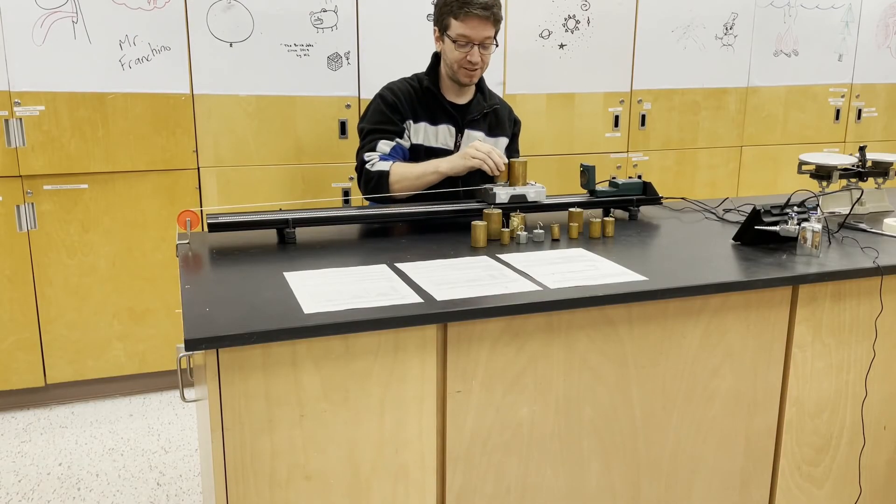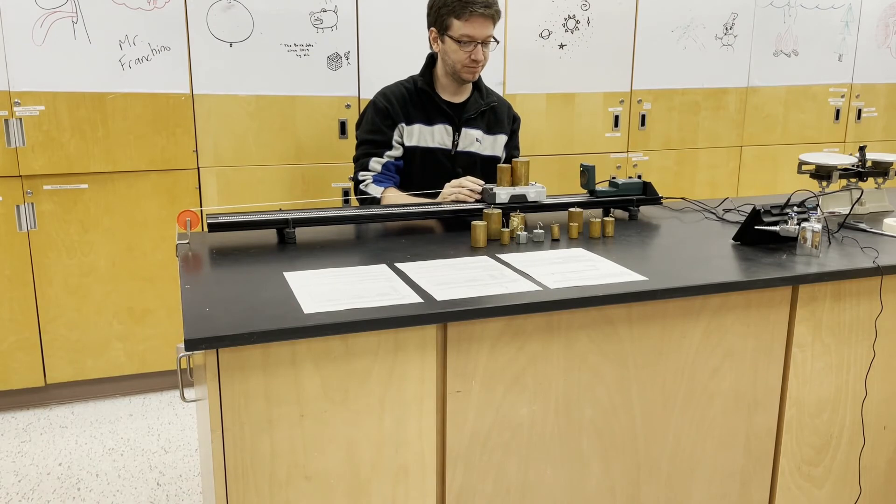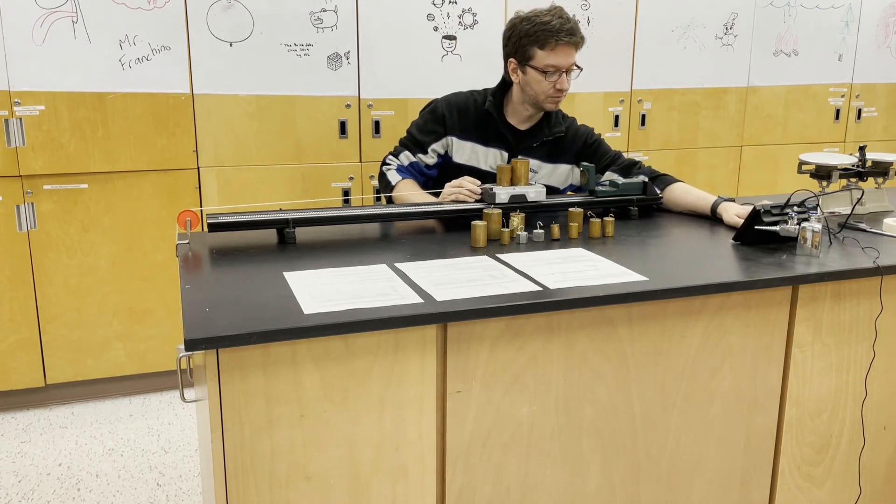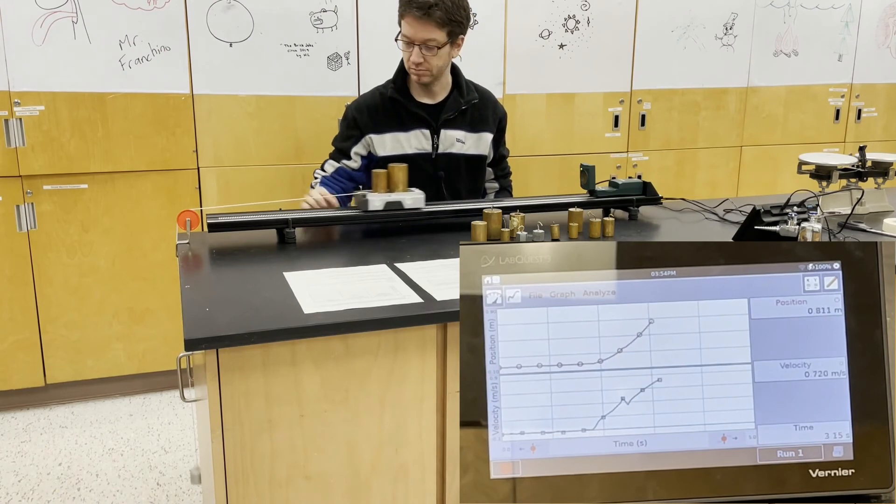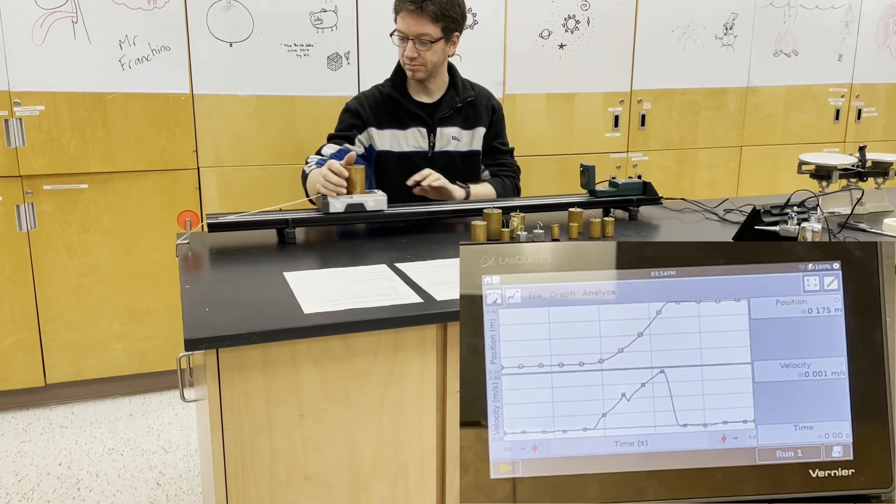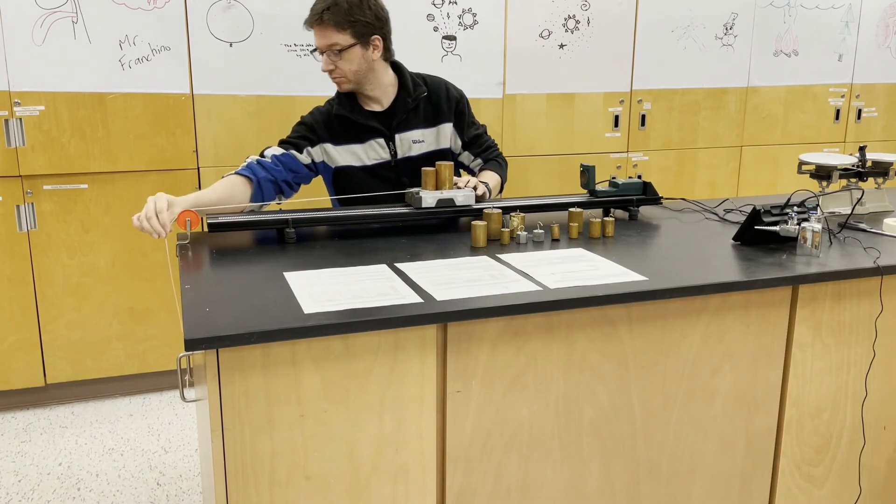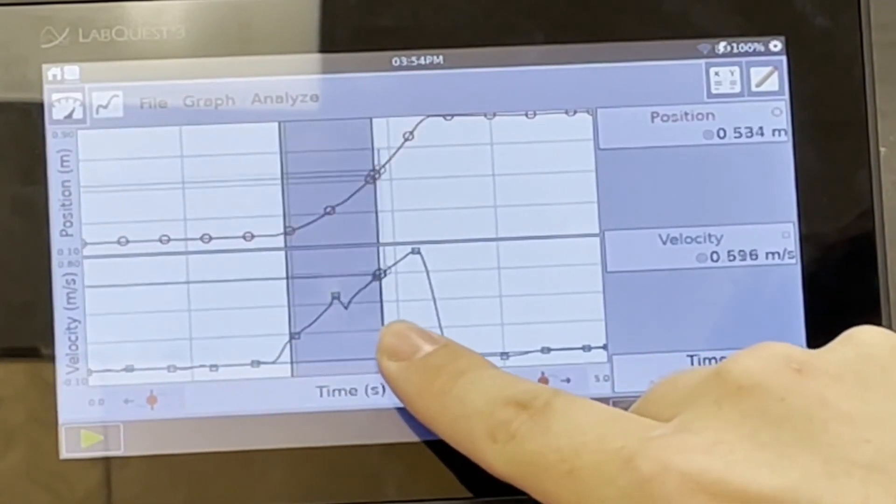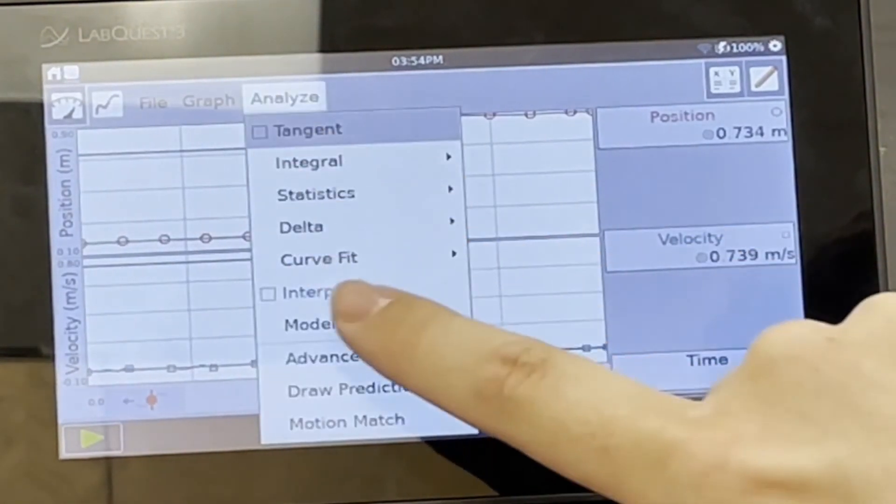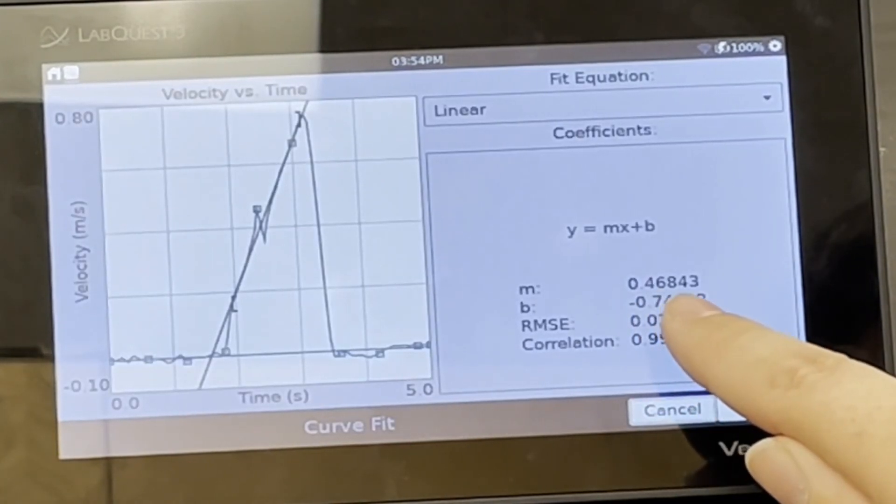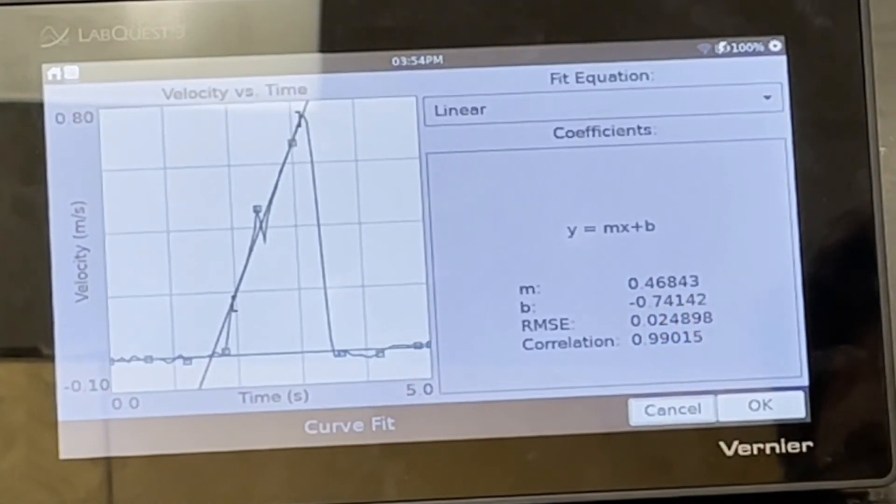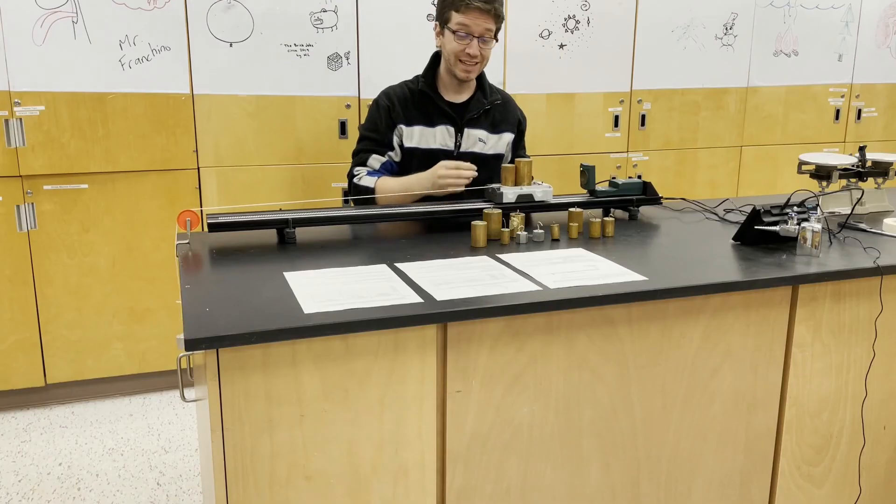Next, add another 500 grams. So here our acceleration is 0.46843 meters per second squared.